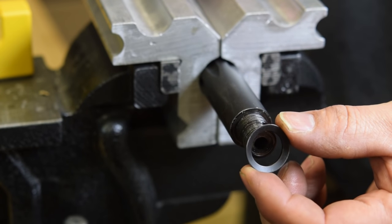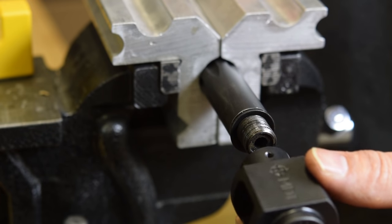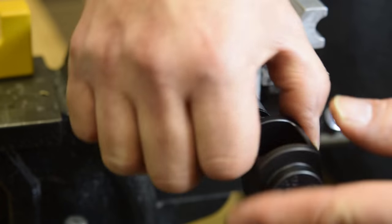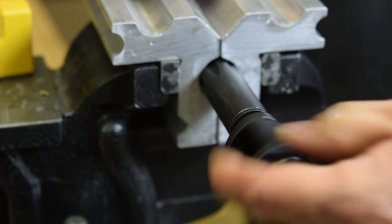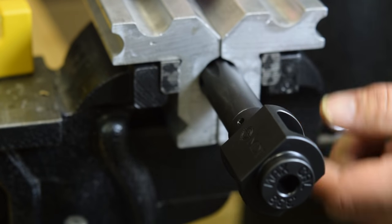Slip on the crush washer with the concave end facing forward towards the muzzle. Take the muzzle brake and thread it onto the muzzle hand tight against the crush washer.